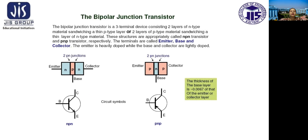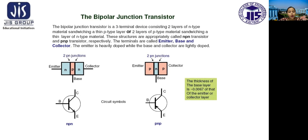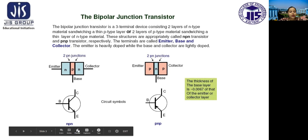So what is a bipolar junction transistor? The bipolar junction transistor is a three-terminal device consisting of two layers of N-type material sandwiching a thin P-type layer, or two layers of P-type material sandwiching a thin N-type material layer. These structures are called NPN transistor and PNP transistor. The terminals are called emitter, base, and collector. The emitter is heavily doped while the base and collector are lightly doped. This is the diagram of an NPN transistor.